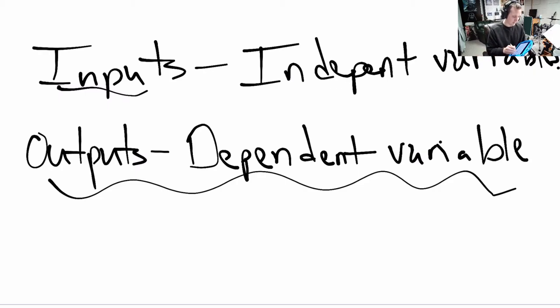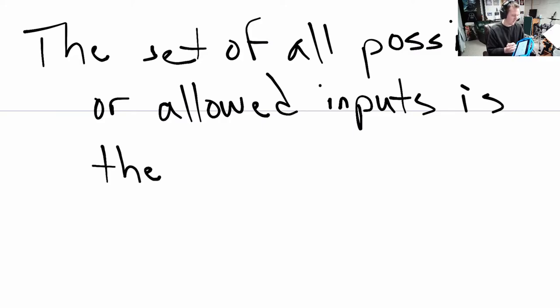So a couple other things here about functions. The set of all possible inputs, possible or allowed, is called or is the, we've done this one before. If I gave you a numerical function like y equals 2x plus 1, if I asked you what are the allowed inputs, you would say all real numbers. But if I gave you this one instead, 1 over x plus 1, well now you can't say all real numbers. What are the allowed inputs? What's the name for that? It's the domain. The allowed inputs are the domain of the function.